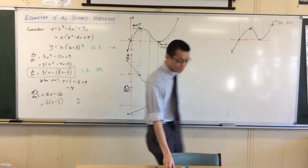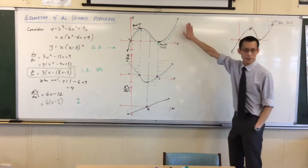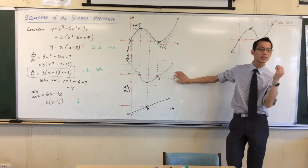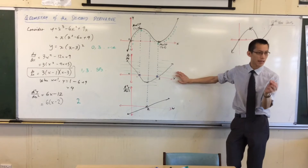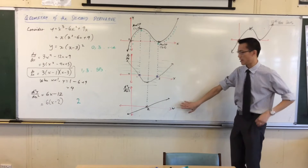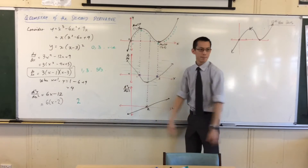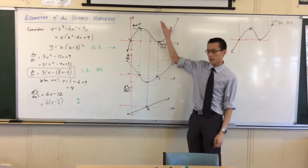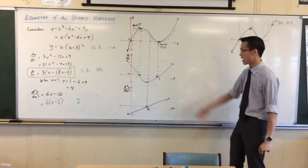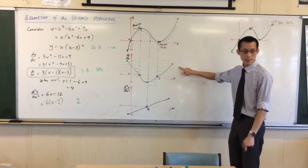The first thing to notice is how it went from this graph to the first derivative — I looked at gradient. This tells me about the gradient of this. In exactly the same way, if I took out the first graph and just started with this, I repeat the same exercise: this graph tells me about the gradient of this.